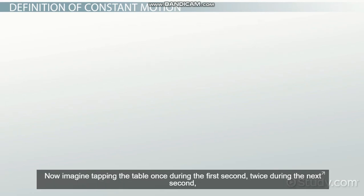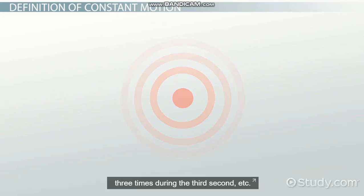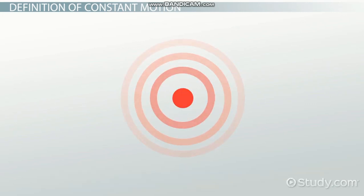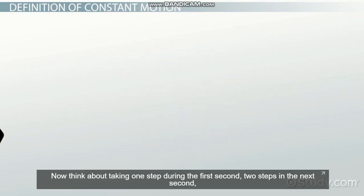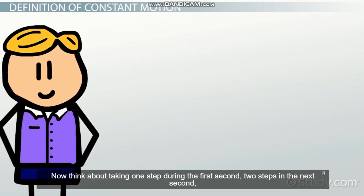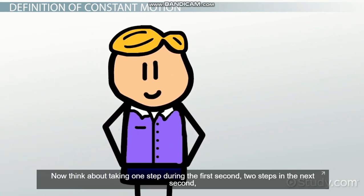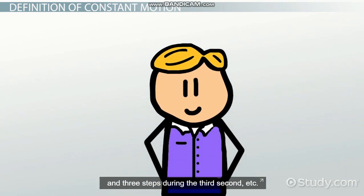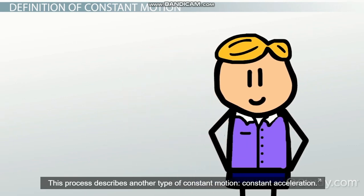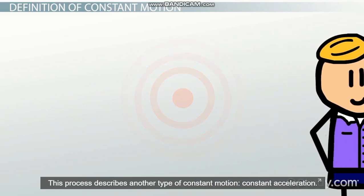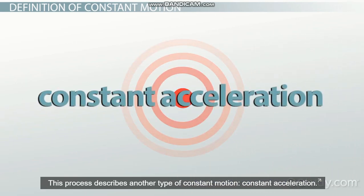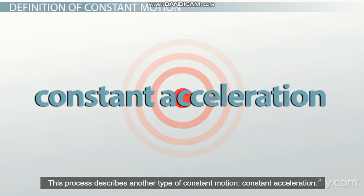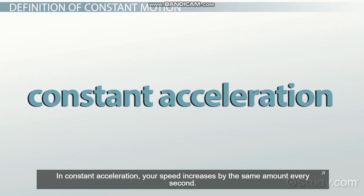Now imagine tapping the table once during the first second, twice during the next second, three times during the third second, and so on. Now think about taking one step during the first second, two steps in the next second, and three steps during the third second, and so on. This process describes another type of constant motion: constant acceleration.